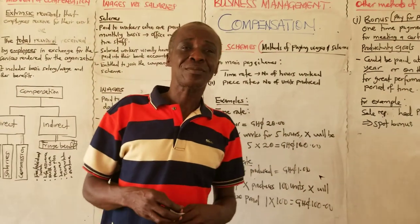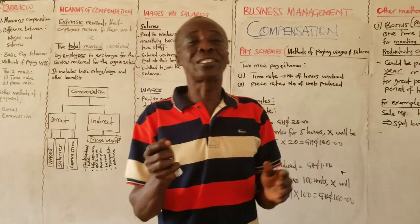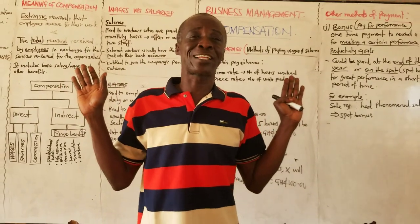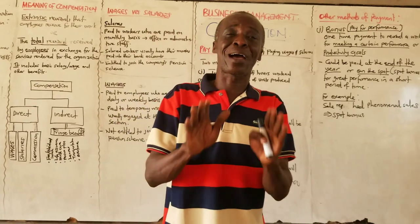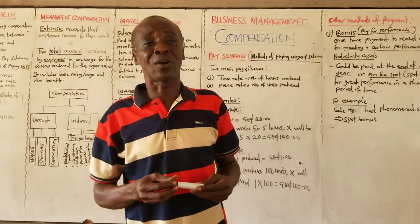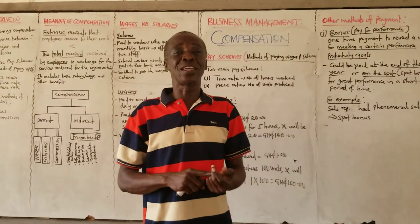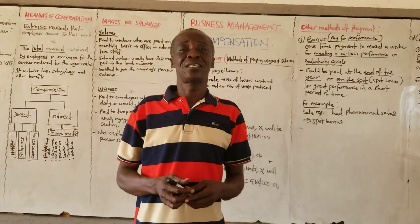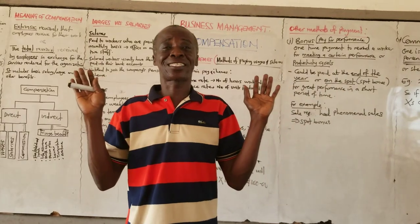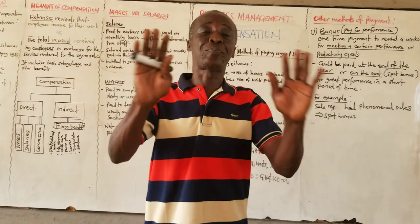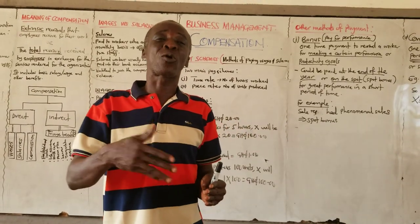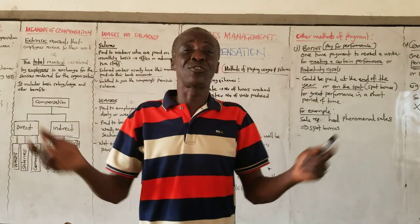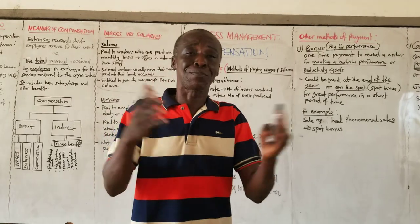Now let us come to the pay schemes - the method of paying wages and salaries. We have two main methods: the time rate and piece rate. What is time rate? Time rate means you are paid according to the number of hours you work. That is all that it means. So let us say in a particular organization, every hour they pay, let's say, 10 cedis. So if you work for five hours within a particular day, you will be paid 50 cedis. The piece rate means that you will be paid according to the number of products you produce within a day.